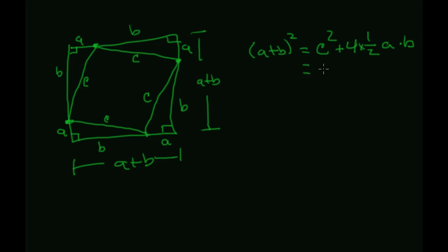So let's simplify this a little bit. So that's C squared, one-half, so plus, right? C squared plus half of four is two A, B.